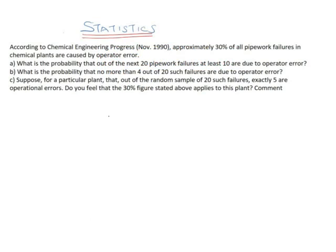Here is a question we are solving under binomial distribution. It states that according to Chemical Engineering Progress of November 1990, approximately 30 percent of all pipework failures in a chemical plant are caused by operator error. So we are given the probability of pipework failure: p = 0.3.